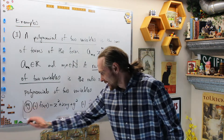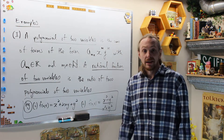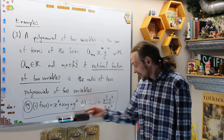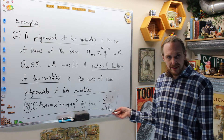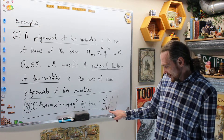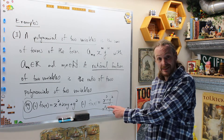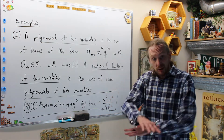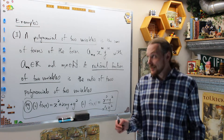A couple of specific examples. The first is a polynomial in two variables; the second we showed in previous videos that the limit doesn't exist at (0, 0). Notice (0, 0) would be division by zero, so (0, 0) is not in the domain. This rational function is continuous everywhere in its domain, which is the punctured plane — everywhere except the origin (0, 0).